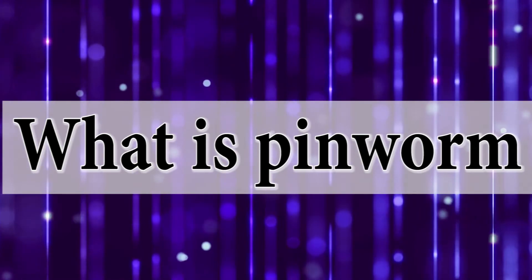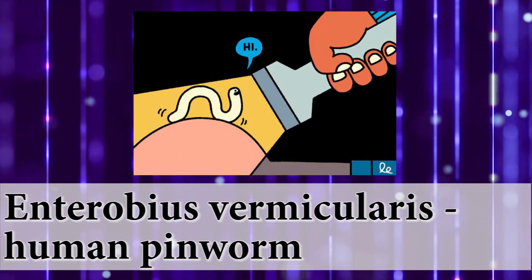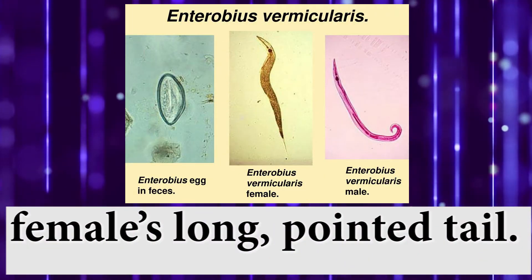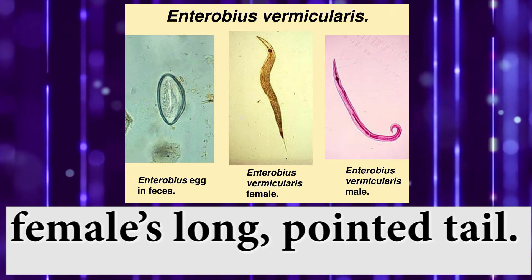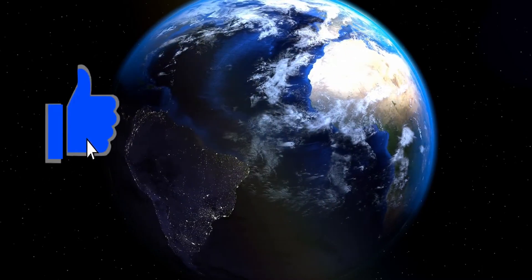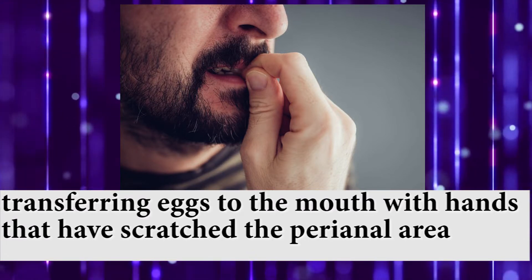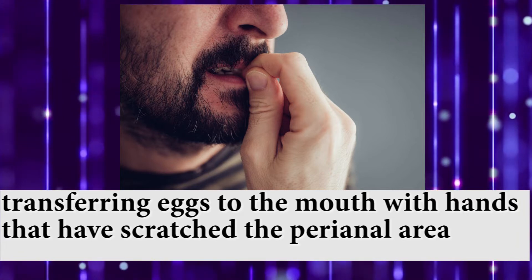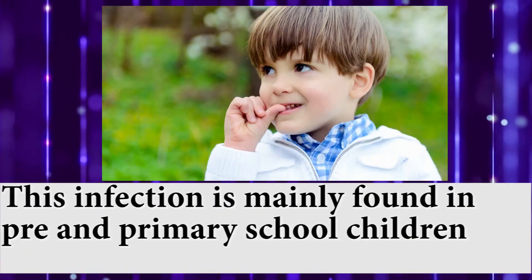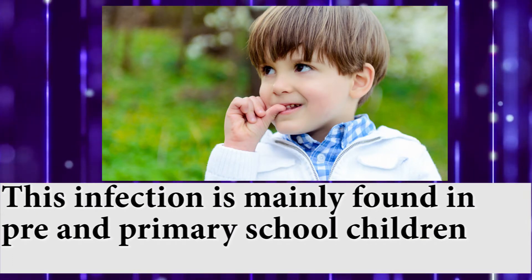What is pinworm? Enterobius vermicularis is widely known as the human pinworm due to the female's long and pointed tail. It has worldwide distribution. Pinworm infection usually occurs via ingestion of infectious eggs by direct anus-to-mouth transfer by finger. This infection is mainly found in pre and primary school children.